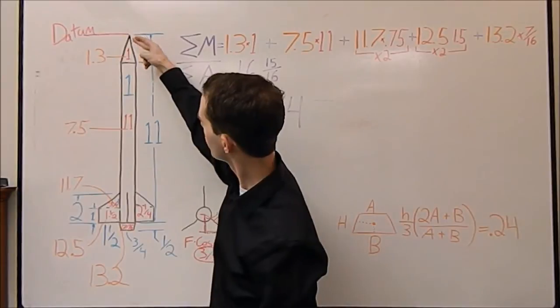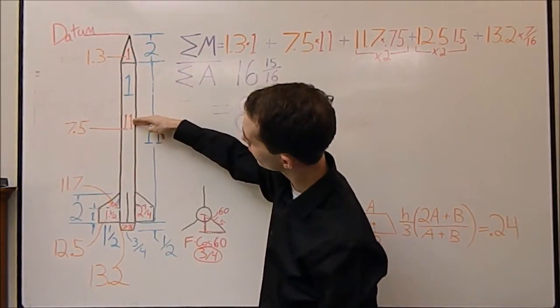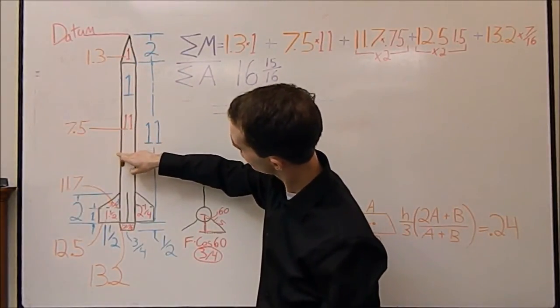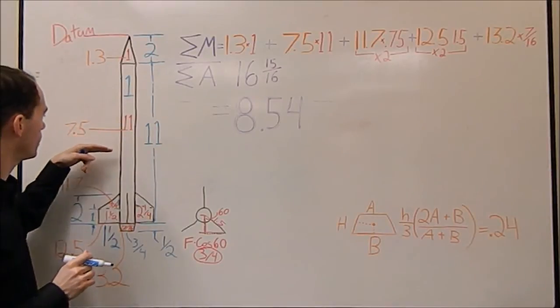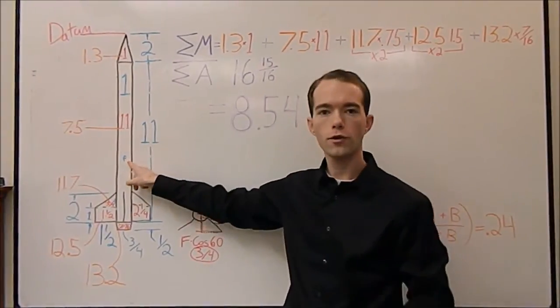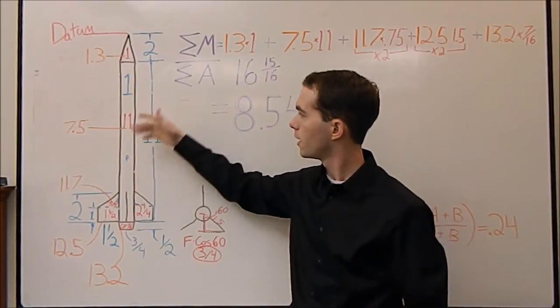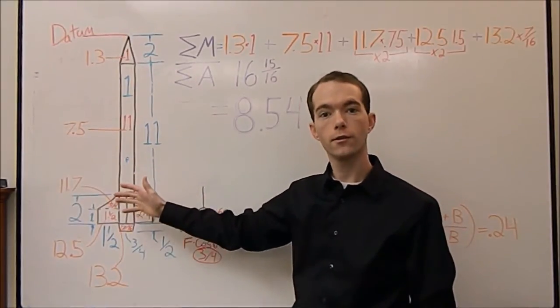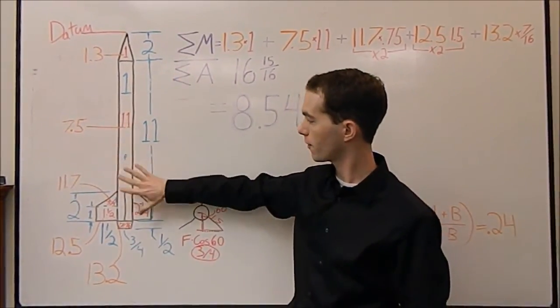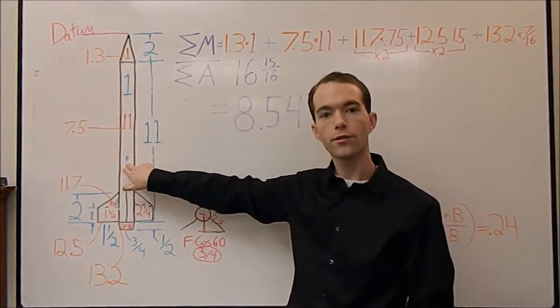That gets you 8.54. So, measuring down from here, we come down 8.54. So, the center of pressure of our rocket is 6, 7, 8 and a half. The center of pressure of this rocket is right here. I don't know where the center of gravity is of this rocket, because that depends on lots of other things. But that's exactly where the center of pressure is going to be.